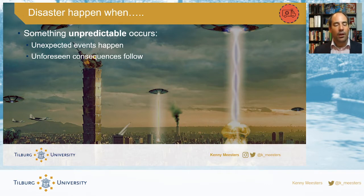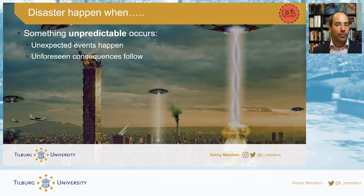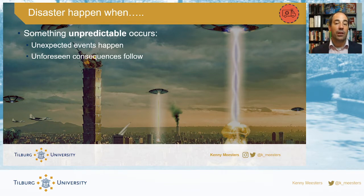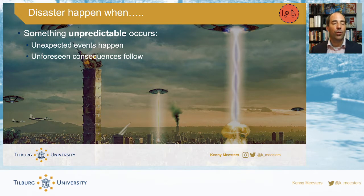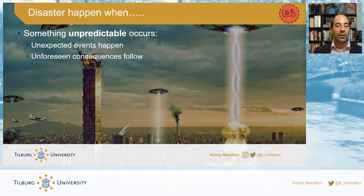We also can't always predict what exactly the consequences will be when such an event occurs. We know an earthquake could happen, but we don't always know exactly how the buildings will be affected, how many people will be affected, or what aid is required.